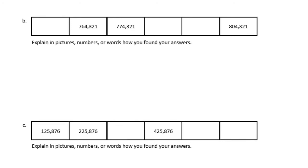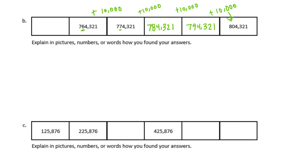B: we have 764,321, 774,321. The difference is in the ten-thousands — this has a 6 and that has a 7 — so we added 10,000. Adding 10,000 gives 784,321, then 794,321, then 804,321. To find what came before 764,321, subtract 10,000 to get 754,321. The pattern was adding 10,000.